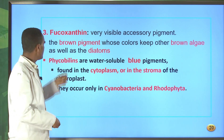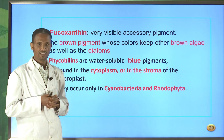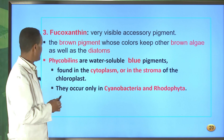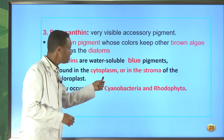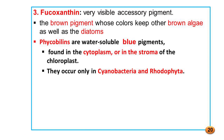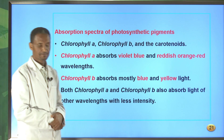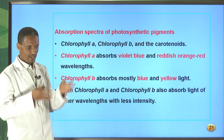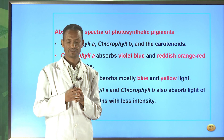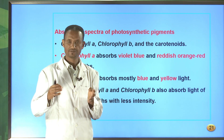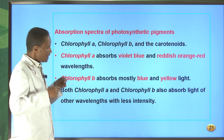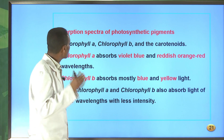The other pigment is phycobilins. These phycobilins are water-soluble blue pigments found in the cytoplasm or in the stroma of the chloroplasts. They occur only in cyanobacteria and rhodophyta. Now let me come to the absorption spectra of photosynthetic pigments. We have seen that there are different photosynthetic pigments including chlorophyll, carotene, and fucoxanthin, and all these pigments have different absorption spectra.